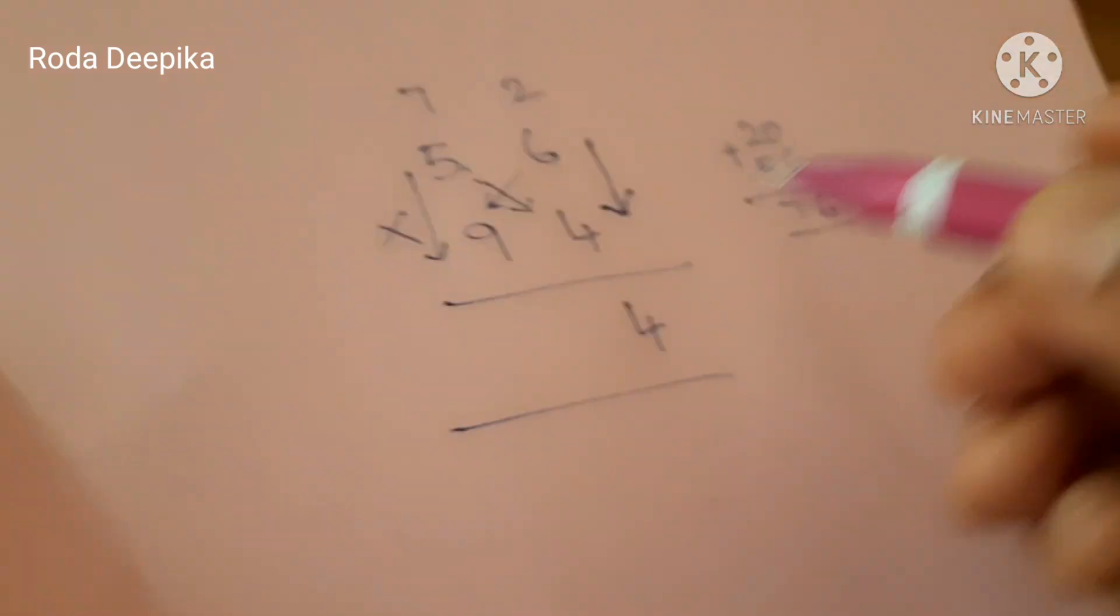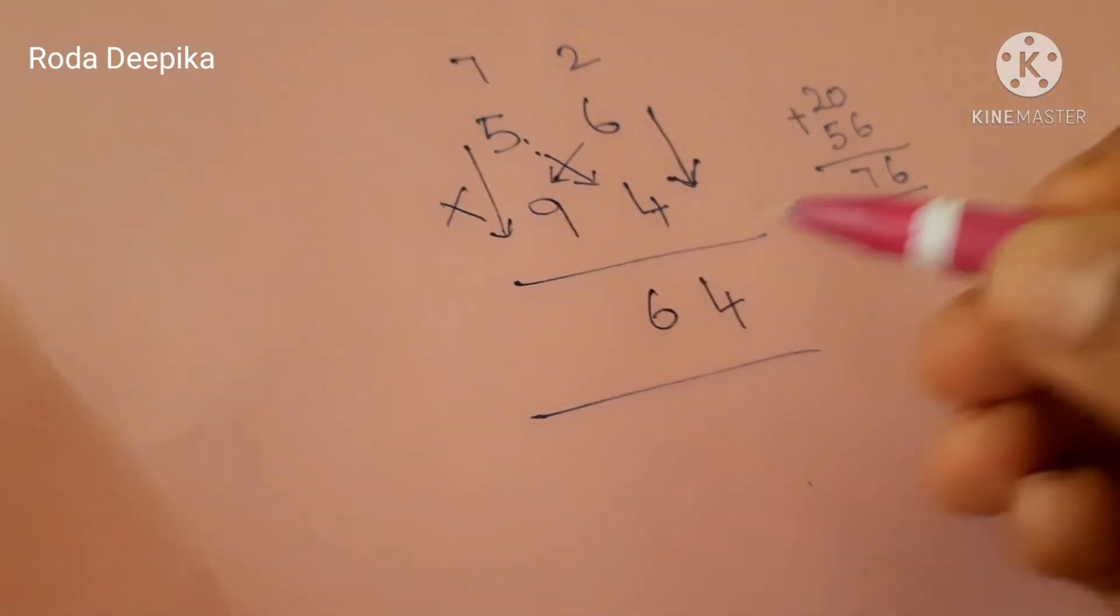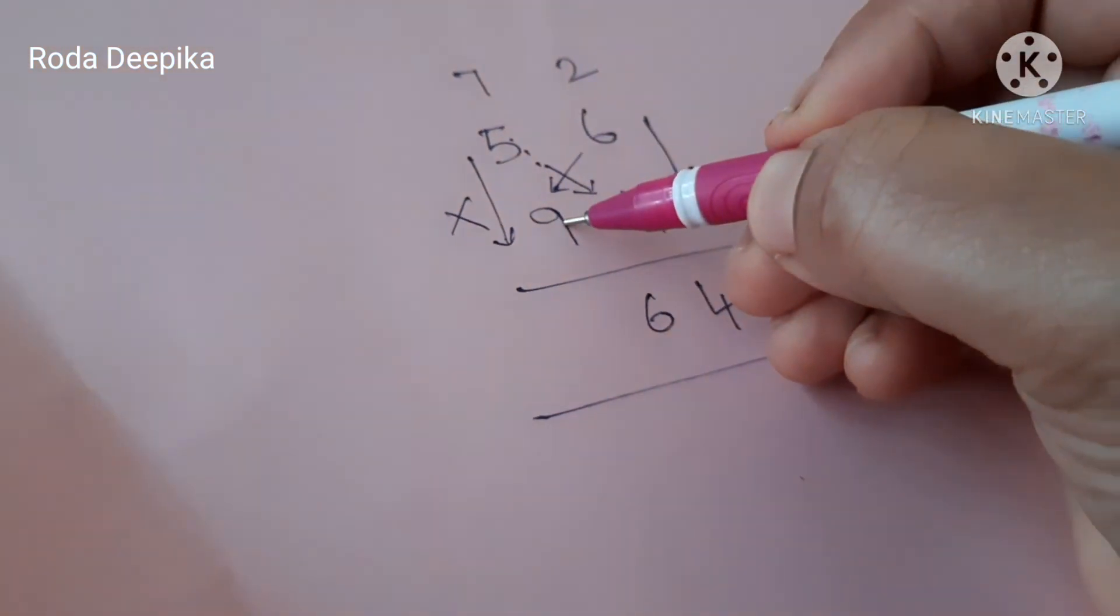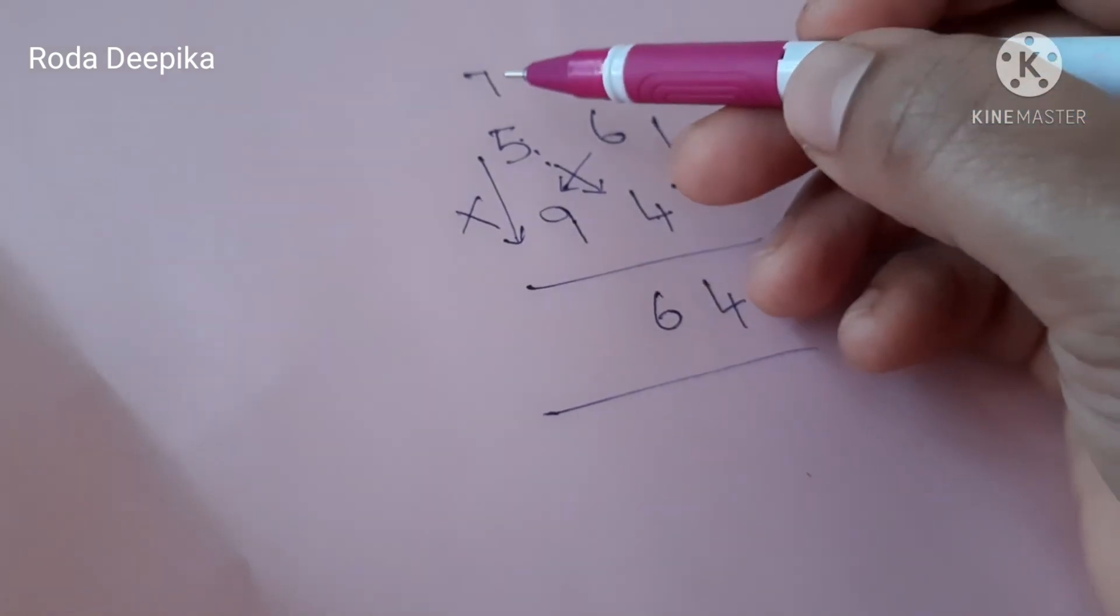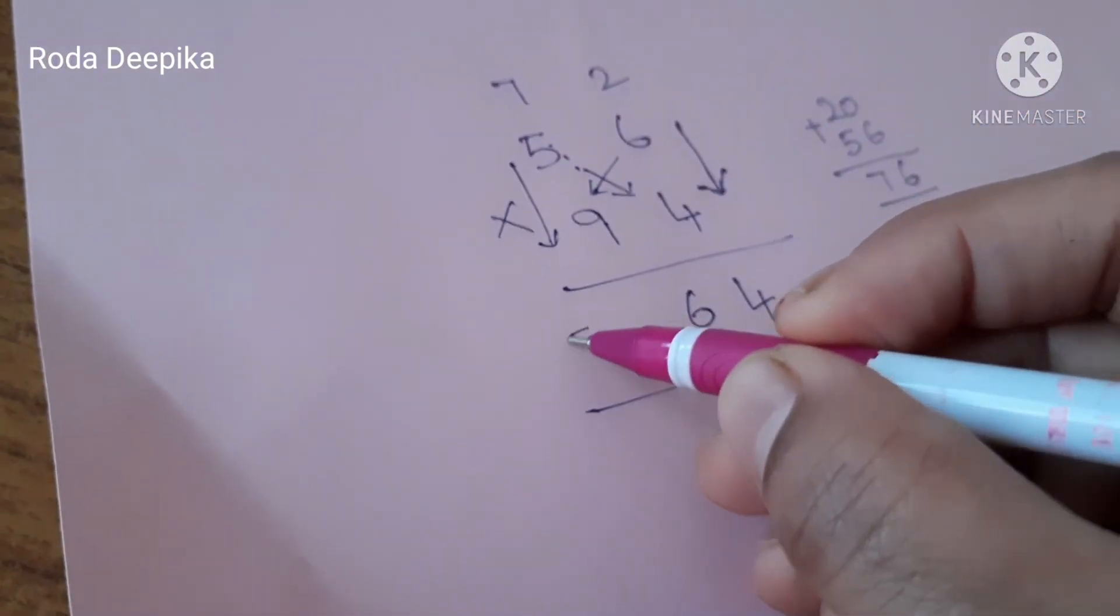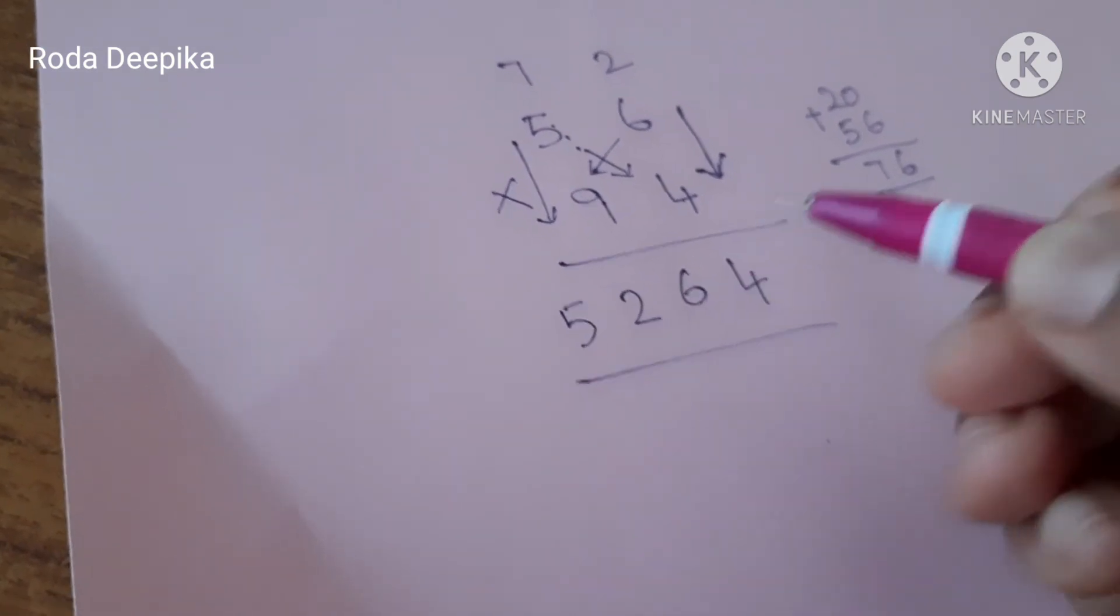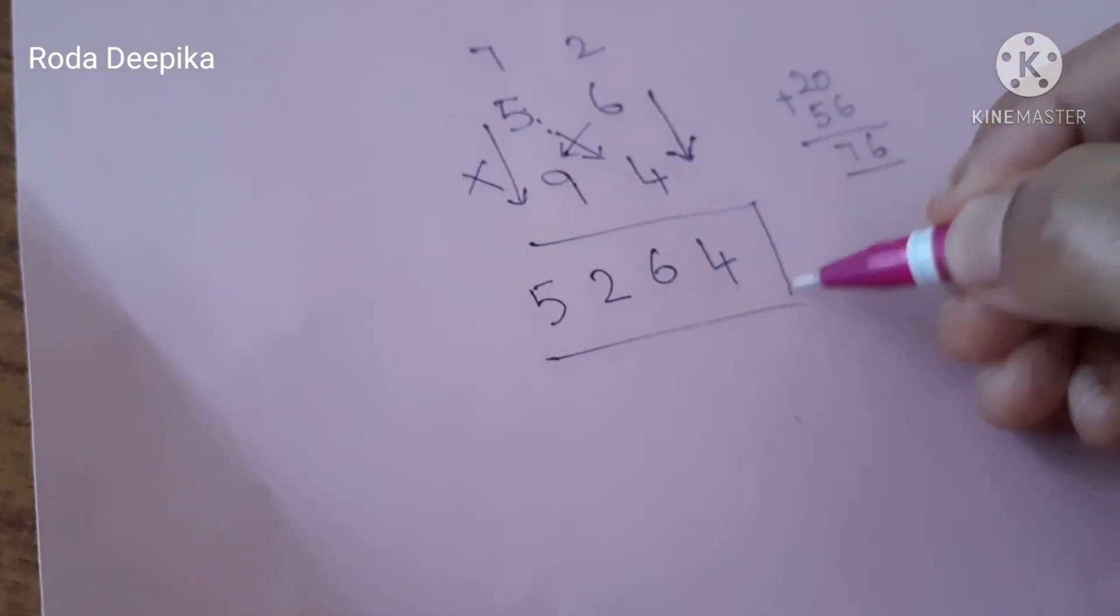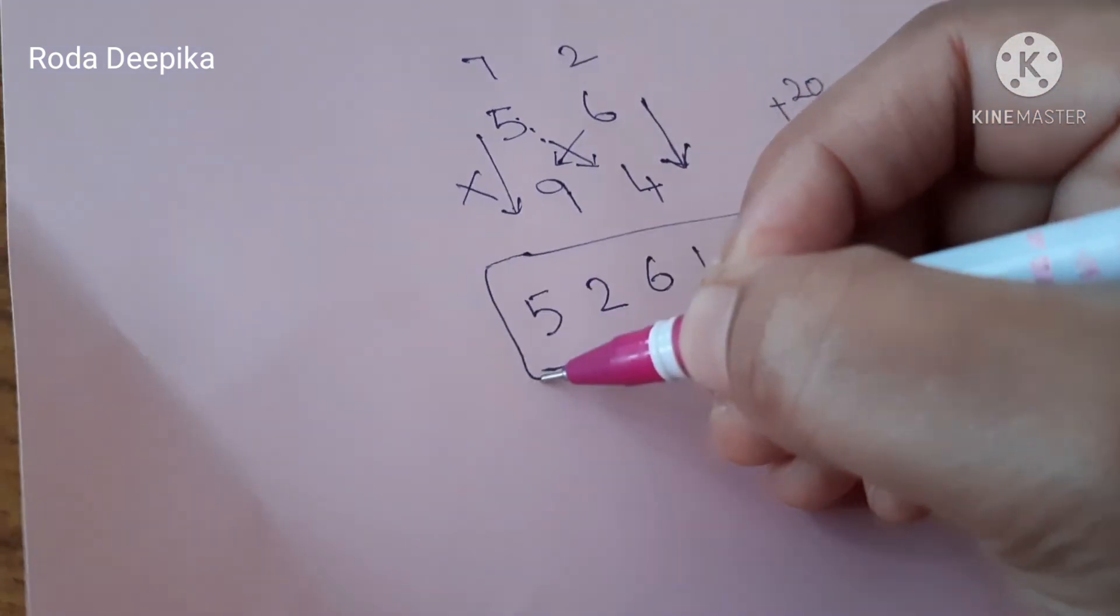Put 7 as carry and 6 below. Now multiply the 10s digit 5 into 9. We get 45 plus add the carry 7. We get 52. This is our final answer 5264.